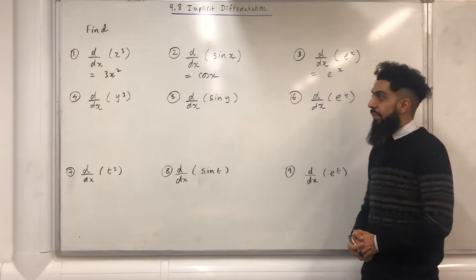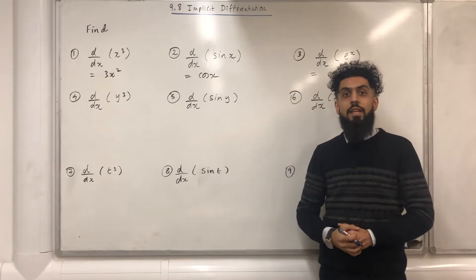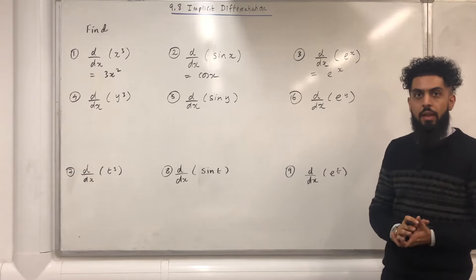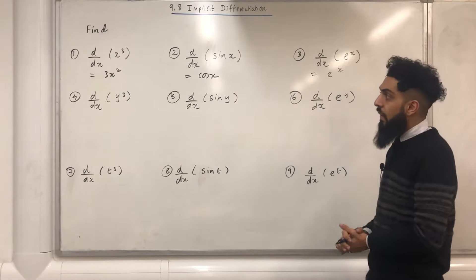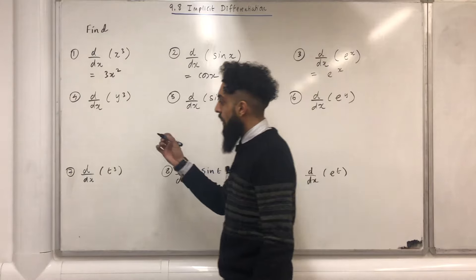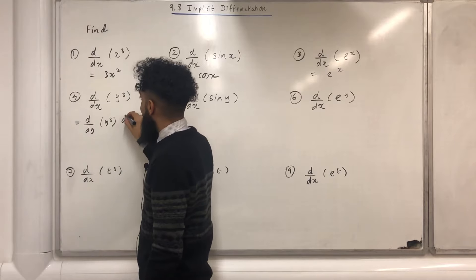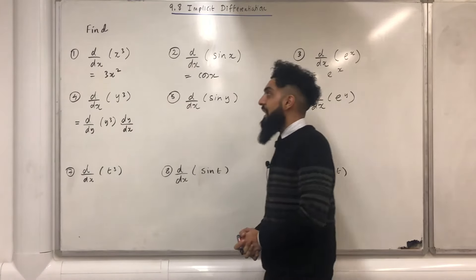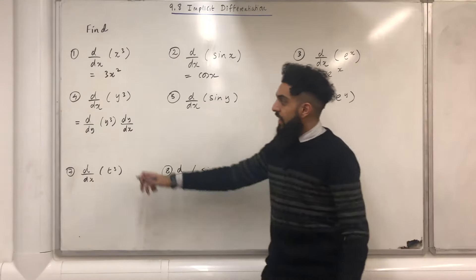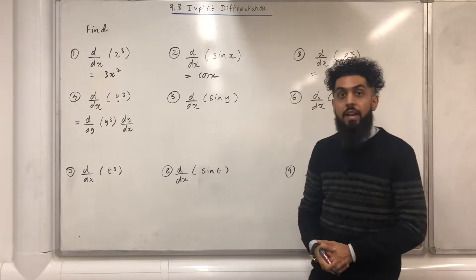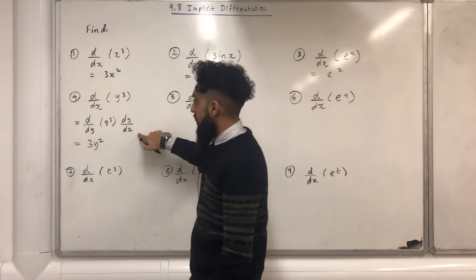Question number four: differentiate y cubed with respect to x. Now I'm differentiating a y variable with respect to x, so I need to use the chain rule. I can rewrite that differential as d over dy of y cubed, multiplied by dy over dx — you can see that dy is cancelling to give me d over dx of y cubed. Differentiating y cubed with respect to y gives 3y squared dy over dx.